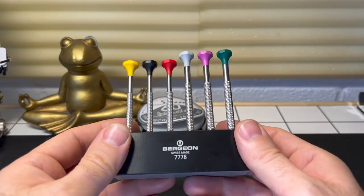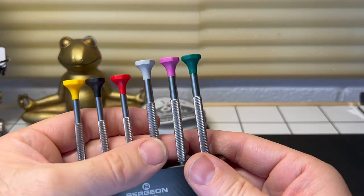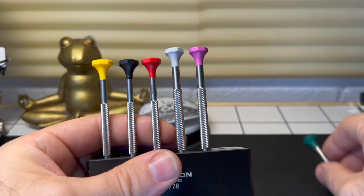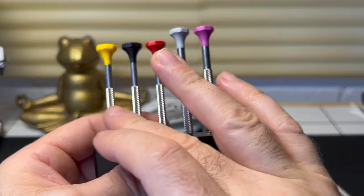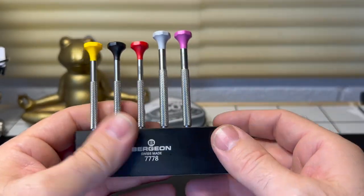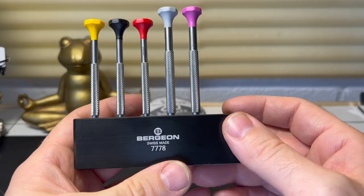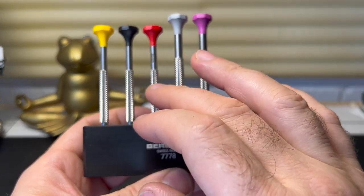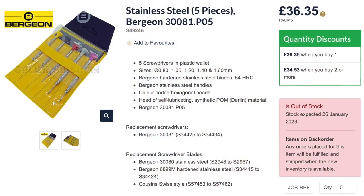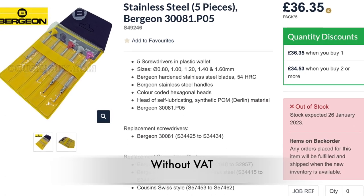Basically the Bergeon set you see here. Now if I take this one out because it will make sense in a minute, you can buy these from the likes of Cousins or Walsh's. I think Cousins is possibly the cheaper of the two, but you can pick this up for under £50.